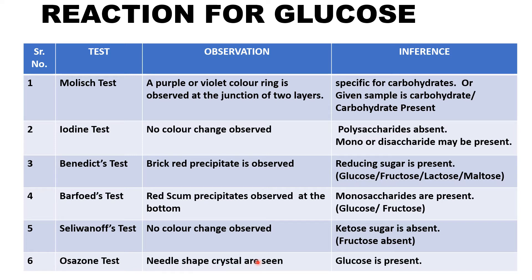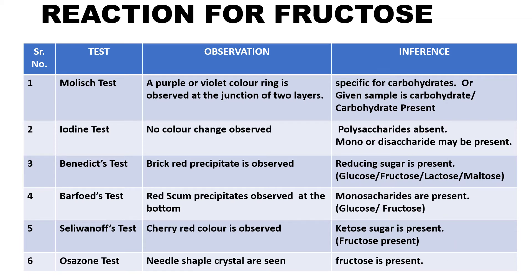That is all the series of tests to be performed for glucose, and by this you can identify the unknown sample. Next, I will discuss the tests for fructose. Starting with the Molisch test — it would be positive, giving a violet color at the junction of the two layers. Inference: carbohydrate present. The iodine test would give no change, so polysaccharide is absent and mono- or disaccharide may be present.